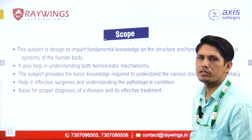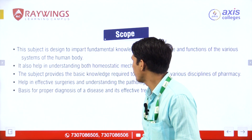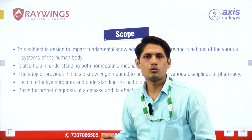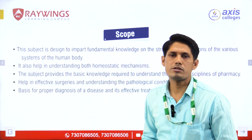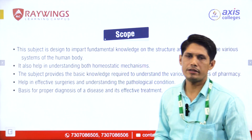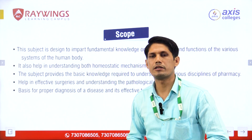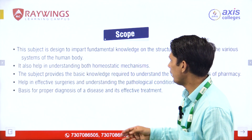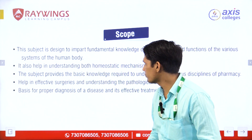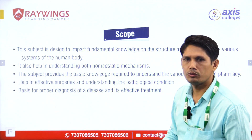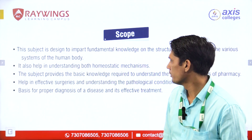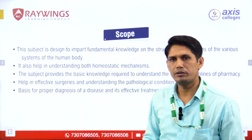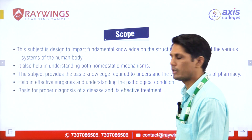The scope of human anatomy and physiology includes fundamental knowledge of various organs and systems — nervous system, respiratory system, digestive system, skeletal system, muscular system and reproductive system — understanding of the mechanisms, and the basic knowledge required to understand various disciplines of pharmacy, as well as effective surgery and treatment of disease.